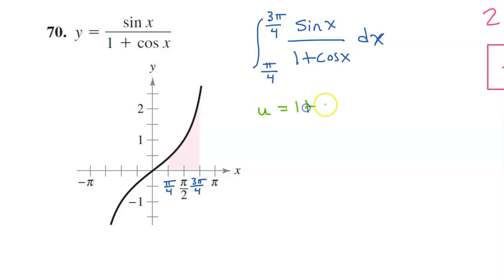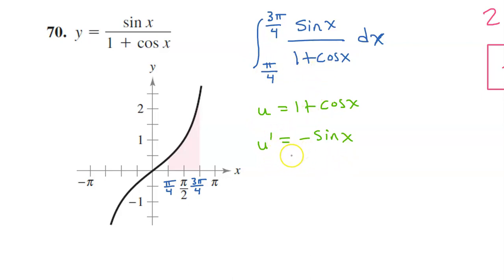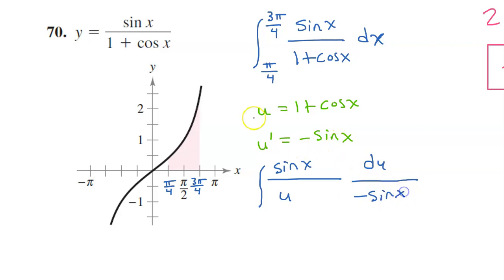Let's let u equal 1 plus cosine x. In that case, u prime will equal negative sine x. When we do this substitution, let's not write the limits of integration, because these are x values and we're putting in u's now. So let's treat this as an indefinite integral until we put the x's back in. We will have the integral of sine x over u, and instead of dx we will write du over u prime, which is negative sine x. We see that we have a sine x in the numerator and the denominator, so these will cancel each other out. And let's put the negative out in the front of the integral, so we have negative integral of 1 over u du.